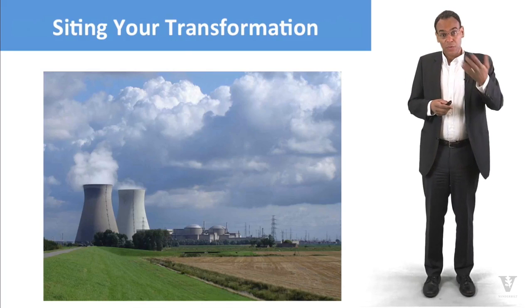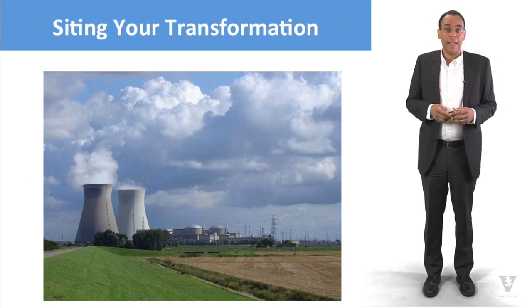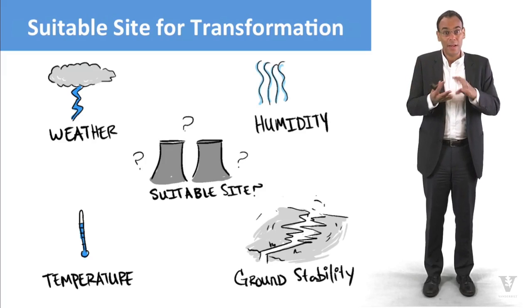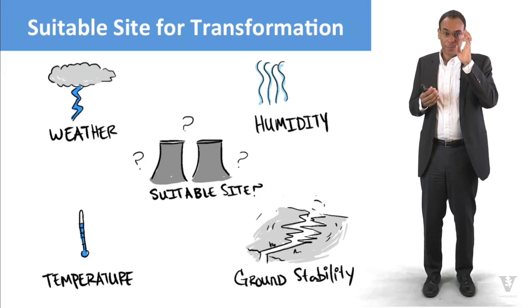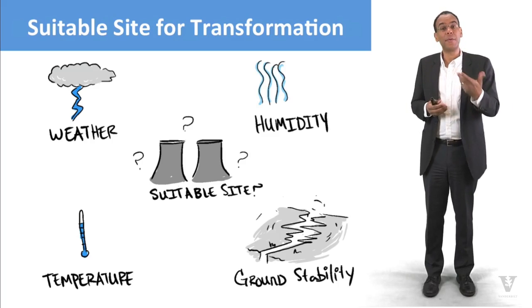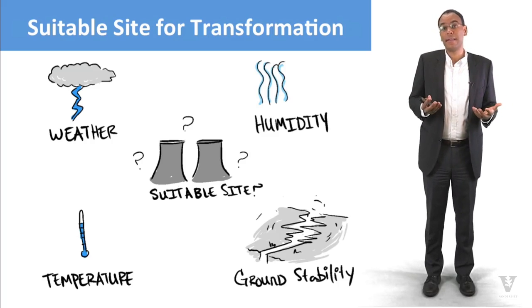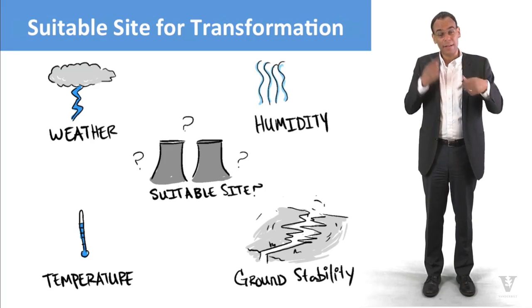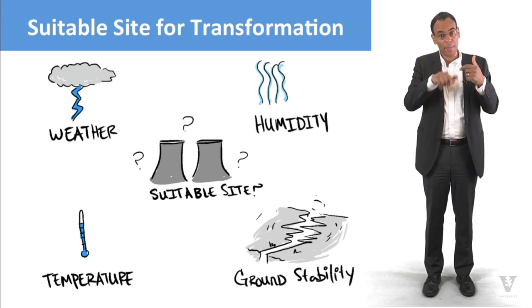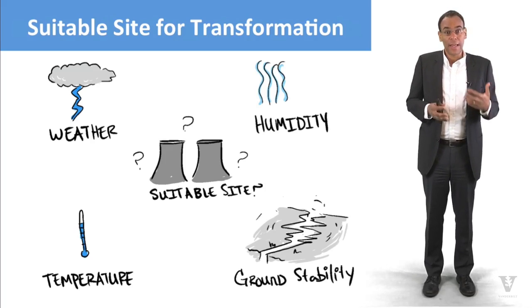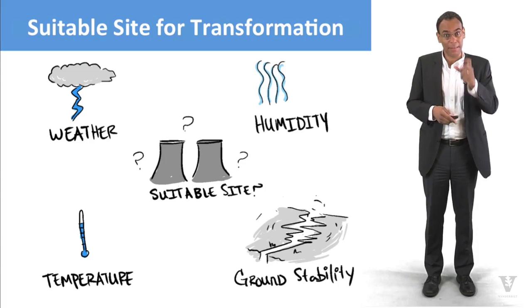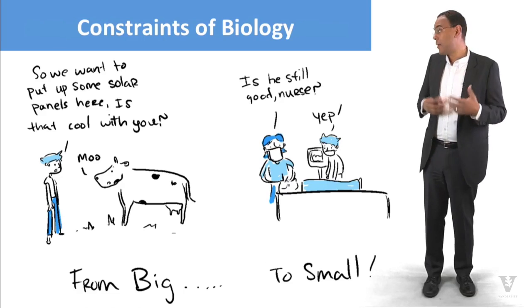Nuclear power plants also have siting constraints — they must be placed in areas with suitable weather, humidity, ground stability, and low earthquake risk. Nuclear plants also require a great deal of cooling, so when one is placed next to a river, water is pulled out to cool the reactor and returned at a much higher temperature. In a small river, this can raise the temperature too high to sustain life.